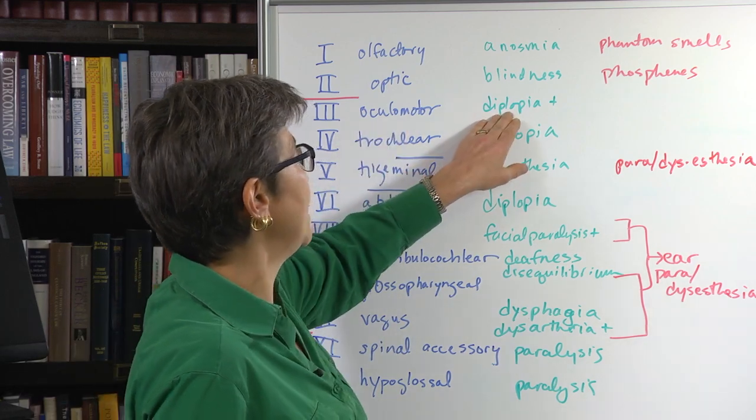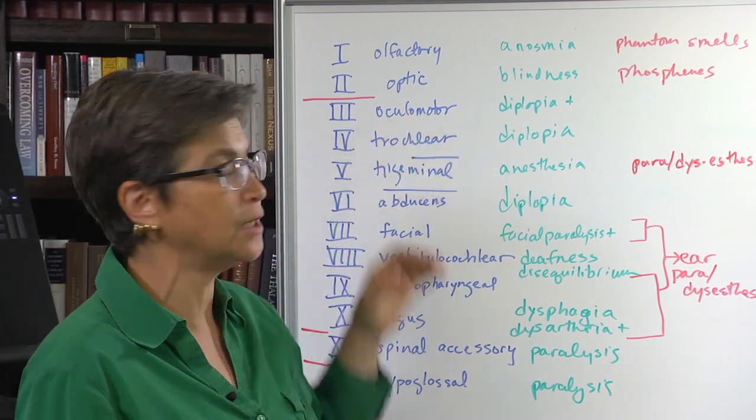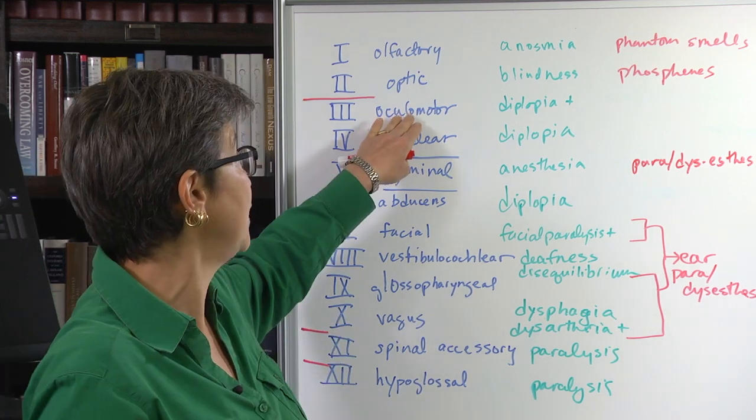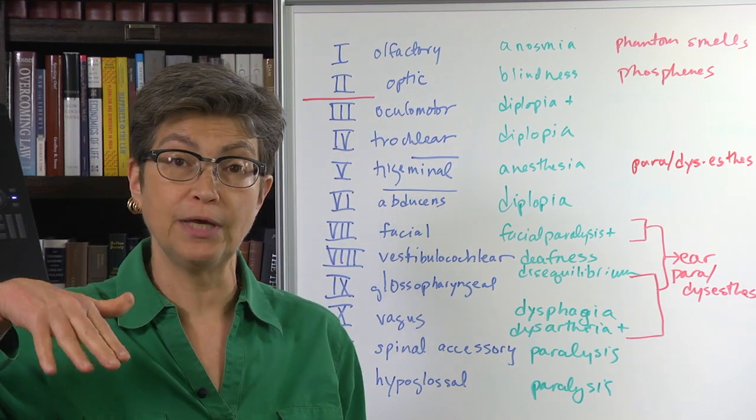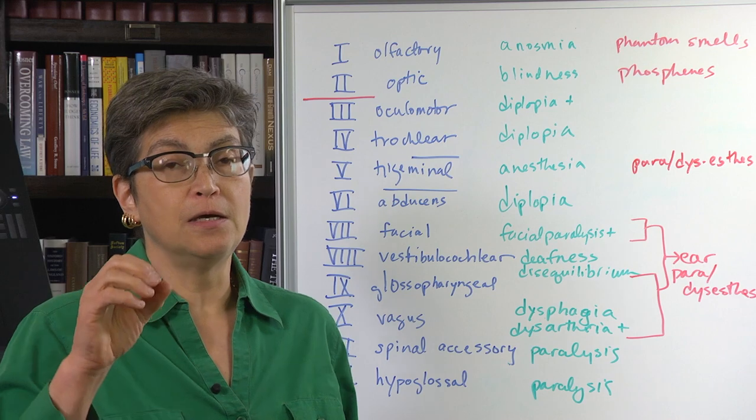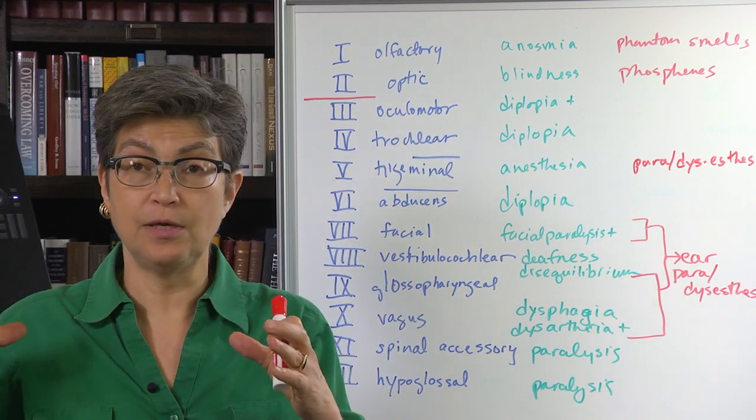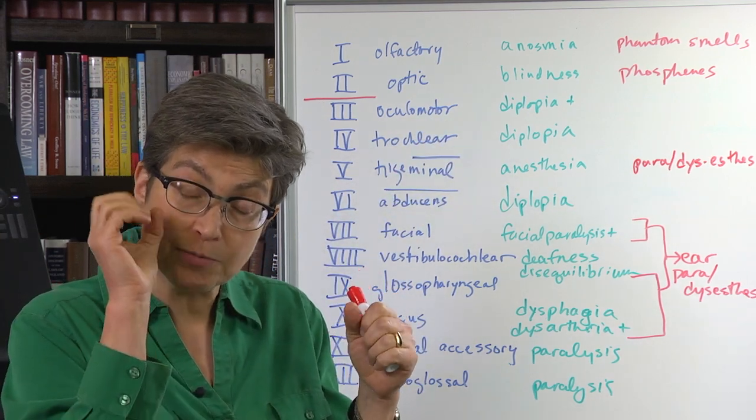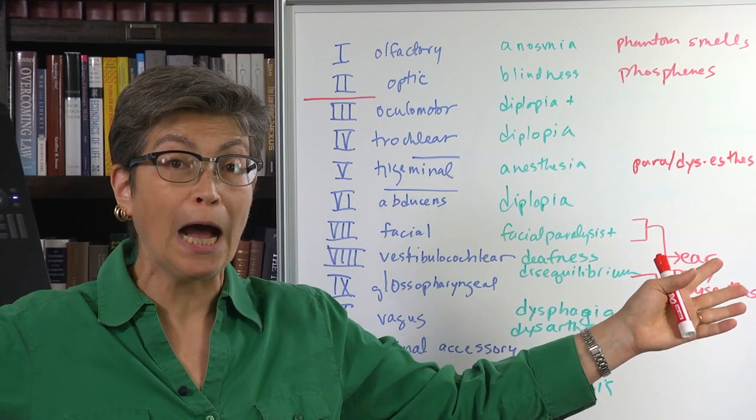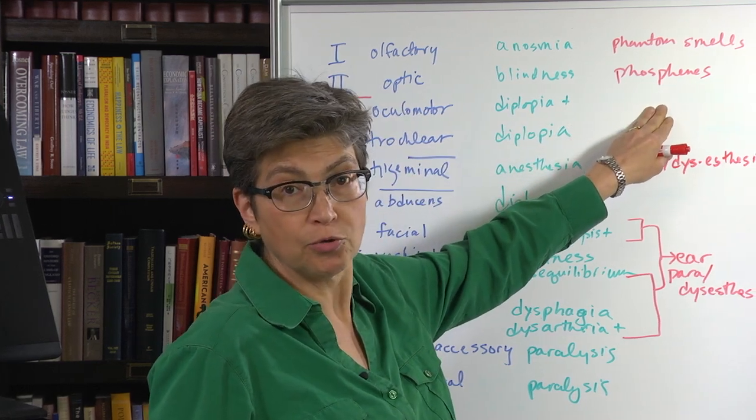In the oculomotor, you get diplopia, which means double vision. And there are some other consequences of this. Another consequence is a droopy eyelid. Remember that the levator palpabry is innervated by the ocular motor nerve. And so you'll get a droopy eyelid, which is called ptosis. And you will also get a blown pupil because the ocular motor is responsible for constricting the pupil. And if that's lesioned, the pupil gets really, really wide. But you don't get any positive signs from an ocular motor lesion.